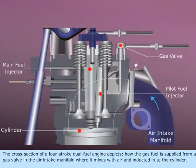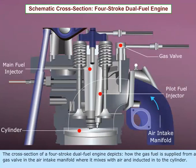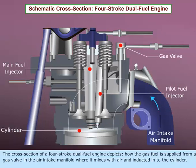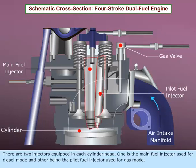The cross-section of a four-stroke dual-fuel engine depicts how gas fuel is supplied from a gas valve in the air intake manifold, where it mixes with air and is inducted into the cylinder. There are two injectors equipped in each cylinder head — one is the main fuel injector used for diesel mode, and the other is the pilot fuel injector used for gas mode.